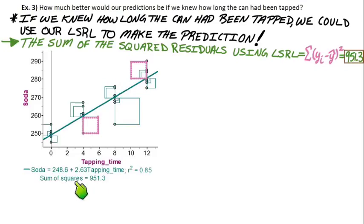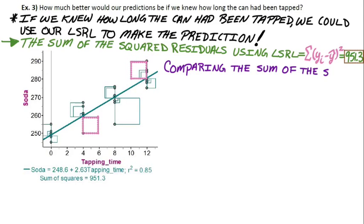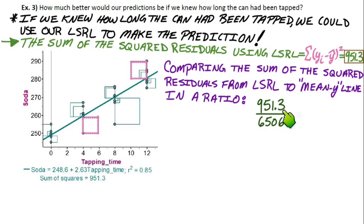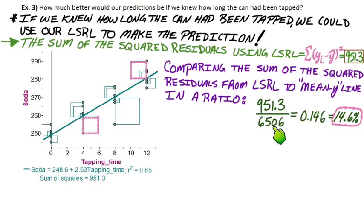Both values are given on the graphs. So how do we compare these? We compare the sum of the squared residuals from the LSRL to the ones from the mean Y line in a ratio: 951.3 divided by 6506, which equals 0.146, or 14.6%. So what is significant about that value? We know there's much less error using the actual LSRL — the squares are obviously smaller, and we have numbers to confirm that.